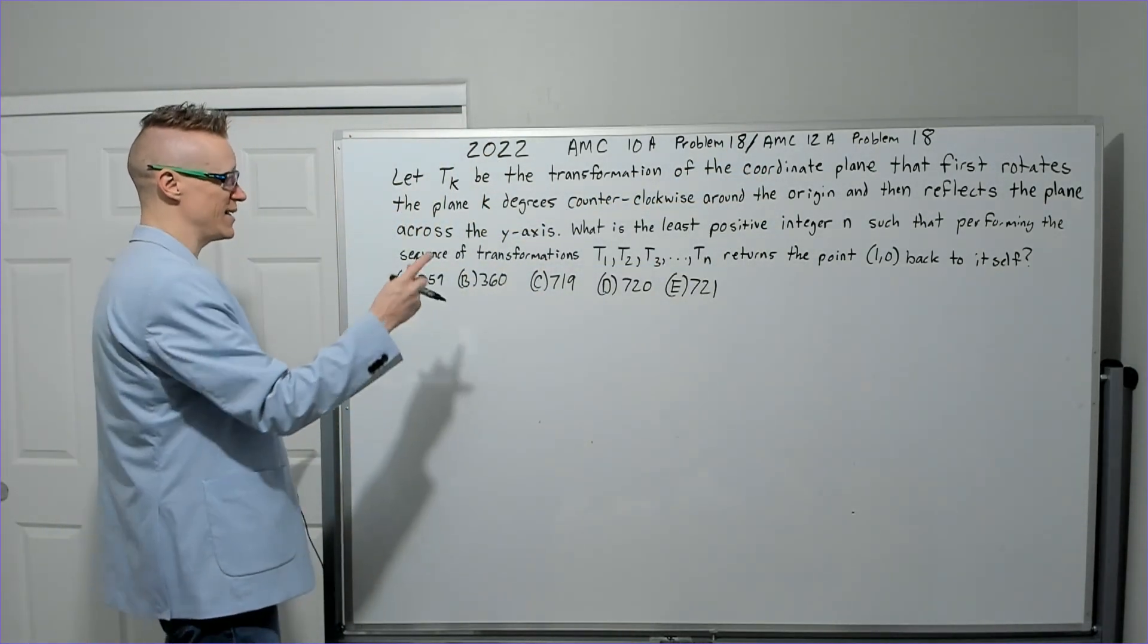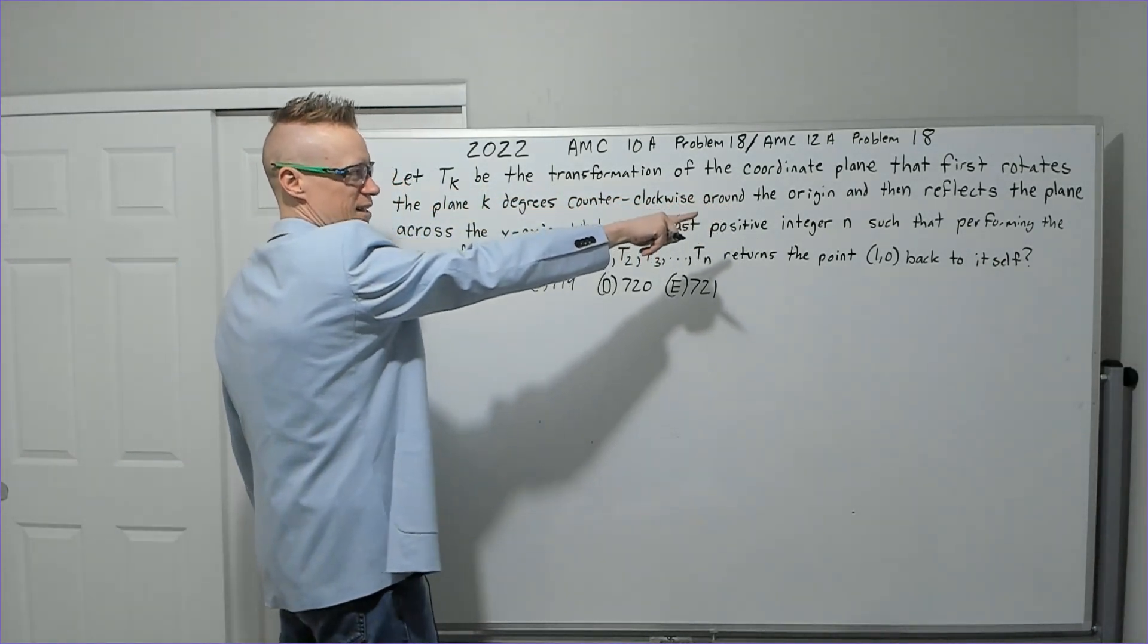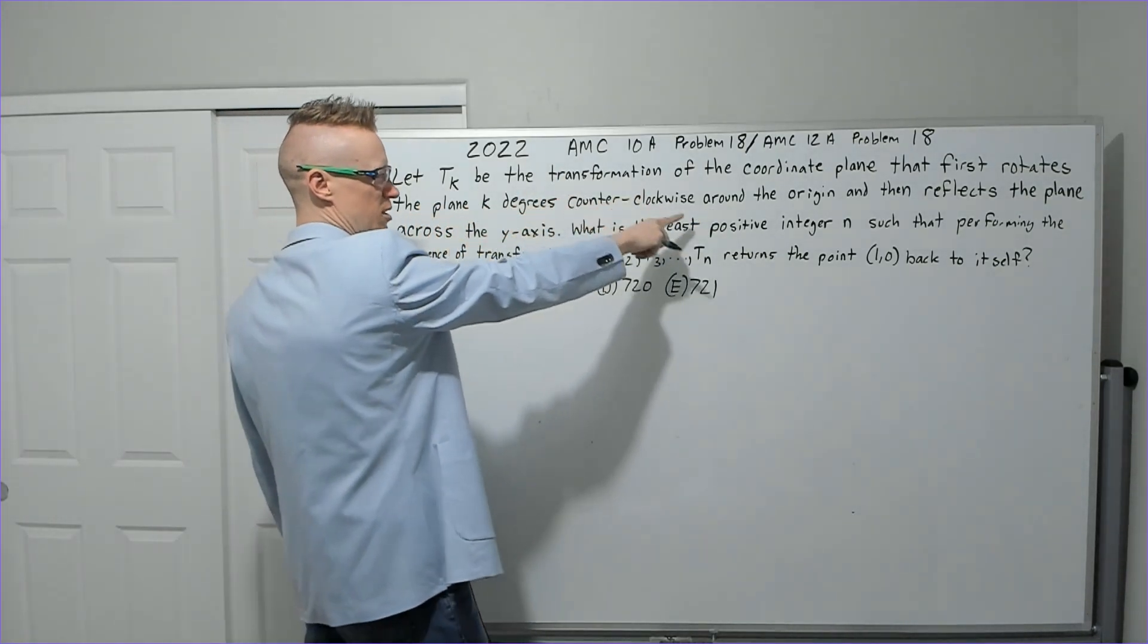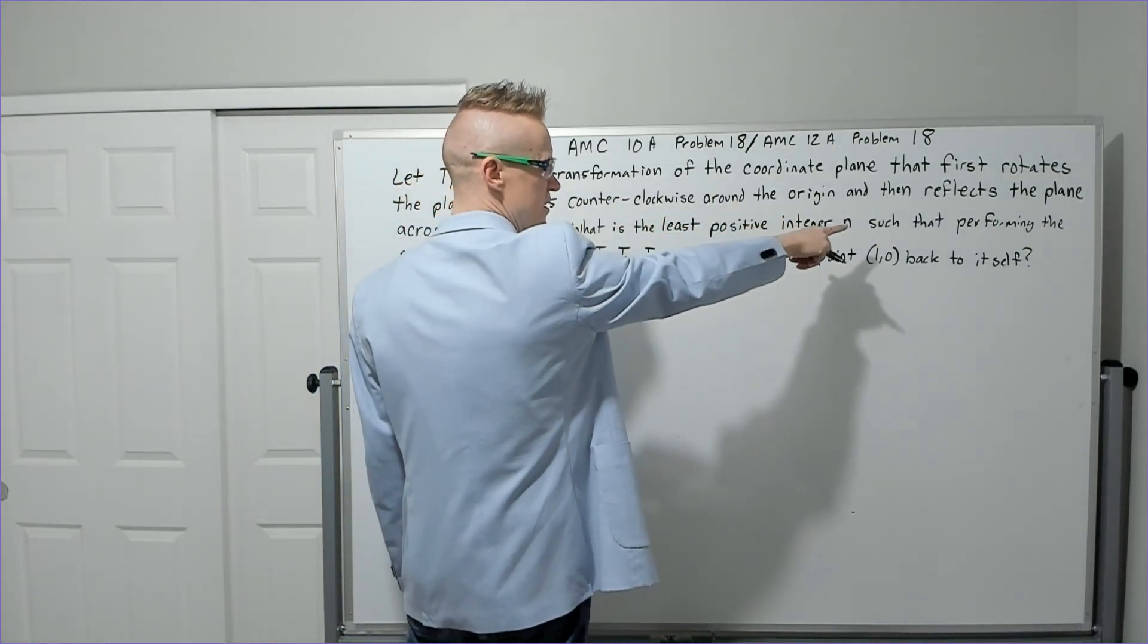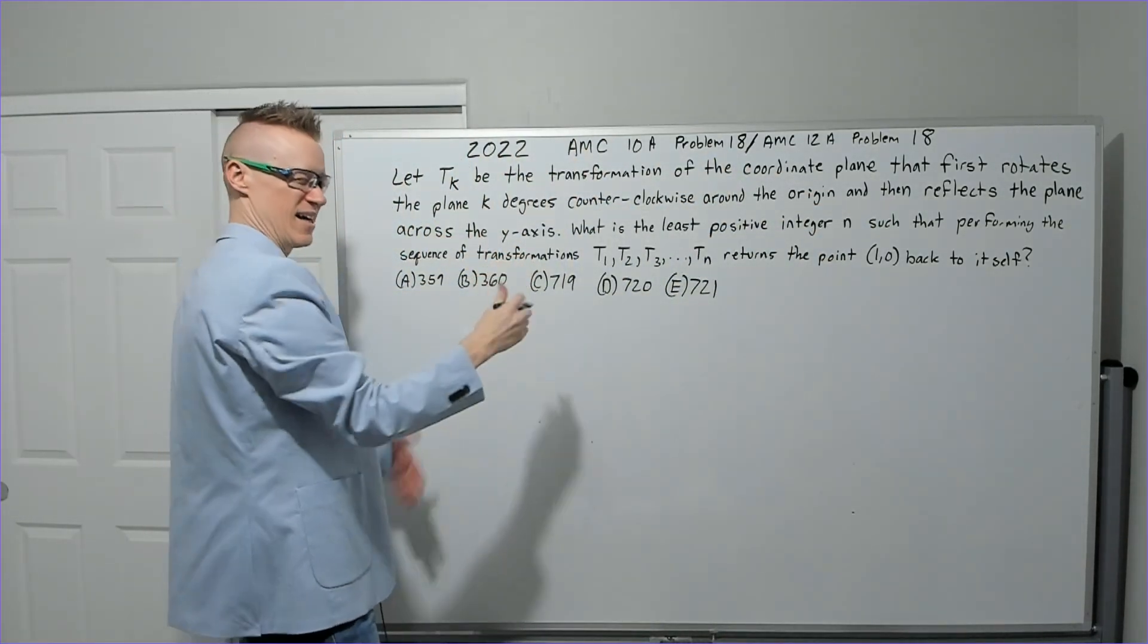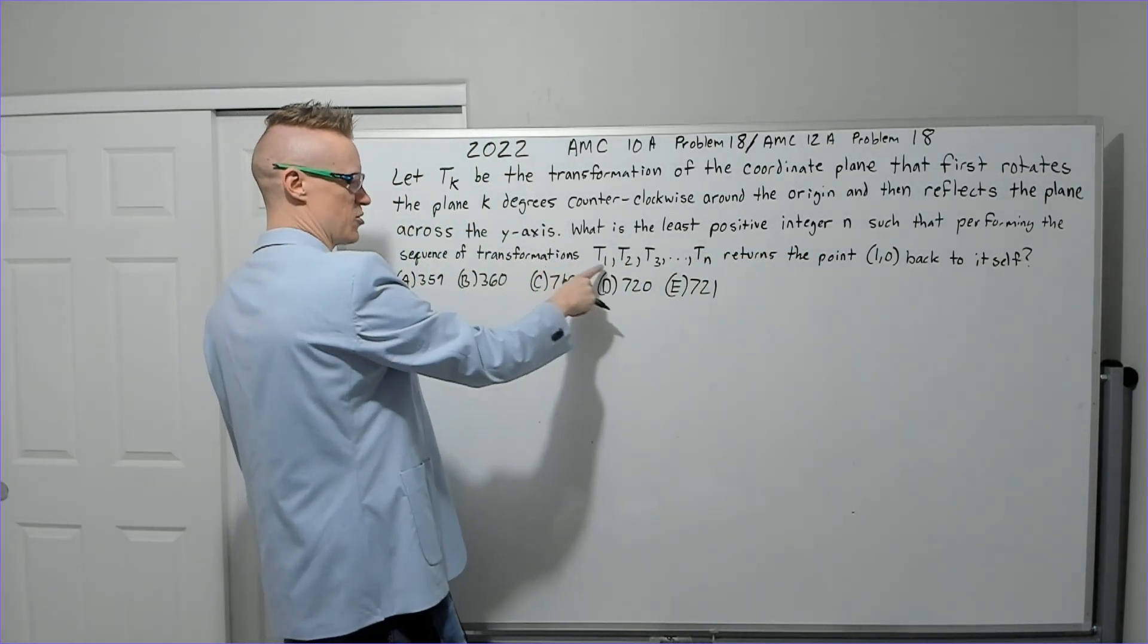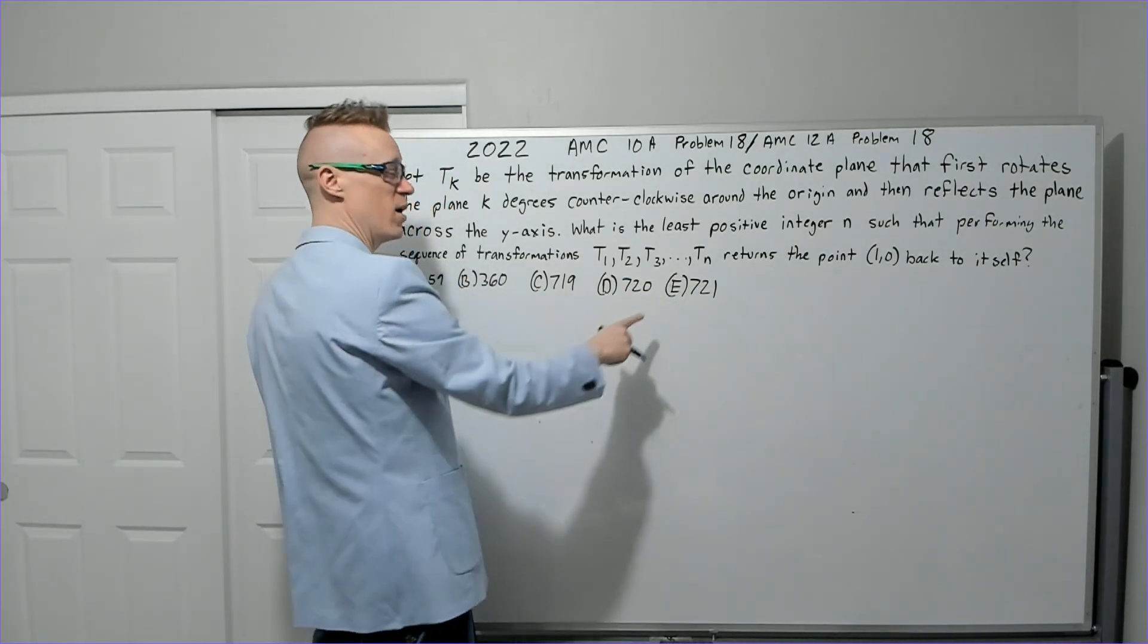So what I did: let T sub k be the transformation of the coordinate plane that first rotates the plane k degrees counterclockwise around the origin and then reflects the plane across the y-axis. What is the least positive integer n such that performing the sequence of transformations returns this point back to itself?